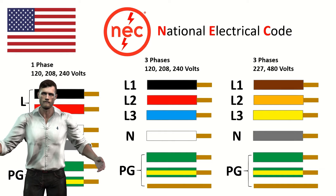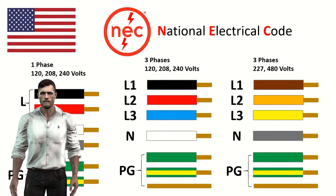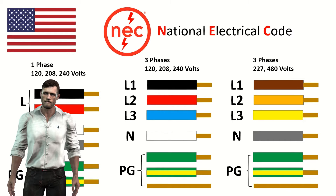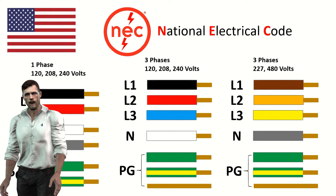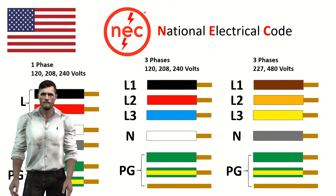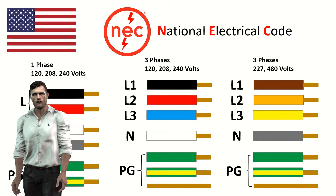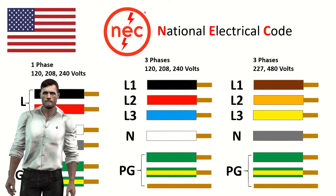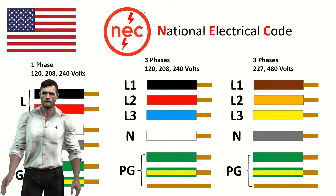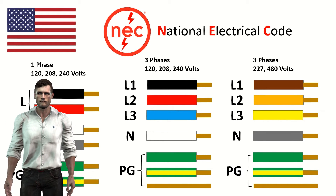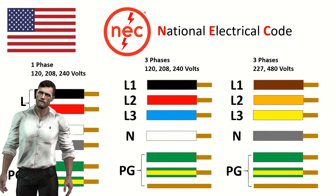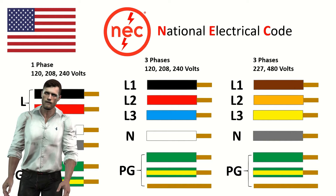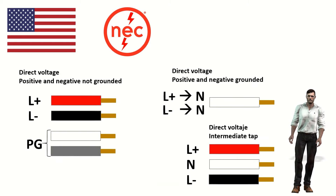For three-phase installations of 277 or 480 volts, used mainly in industry, we have brown for line 1 (L1), orange for line 2 (L2), yellow for line 3 (L3), and gray for neutral (N). The protection or ground wire (PG) again uses the colors green, green with a yellow stripe, or the bare copper wire.